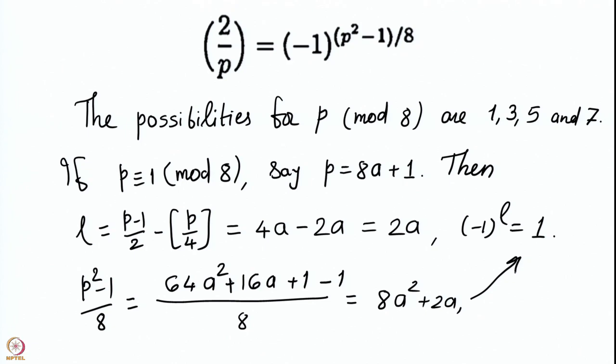This calculation needs to be done for each of the 4 congruence classes modulo 8: p congruent to 1, 3, 5, and 7 mod 8. Doing the computation for these 4 cases tells you what the Legendre symbol (2/p) is, once we have Gauss Lemma. We have proved Gauss Lemma in the last lecture. In this lecture, we recalled it and also used it to compute the Legendre symbol (2/p).